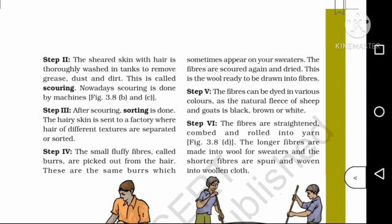Step 1 is shearing — the first step, not harmful to the sheep. Step 2 is scouring — done by machine. Step 3 is sorting — separating hair by texture at a factory. Step 4 is cleaning of burrs — pick out small fluffy fibers, wash and dry. Step 5 is dyeing. Step 6 is rolling into yarn — longer fibers for sweaters, shorter for woolen cloth.